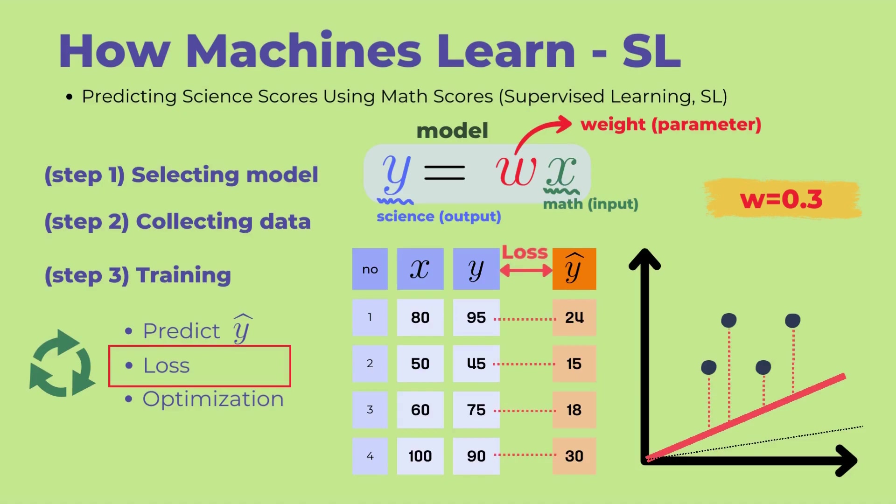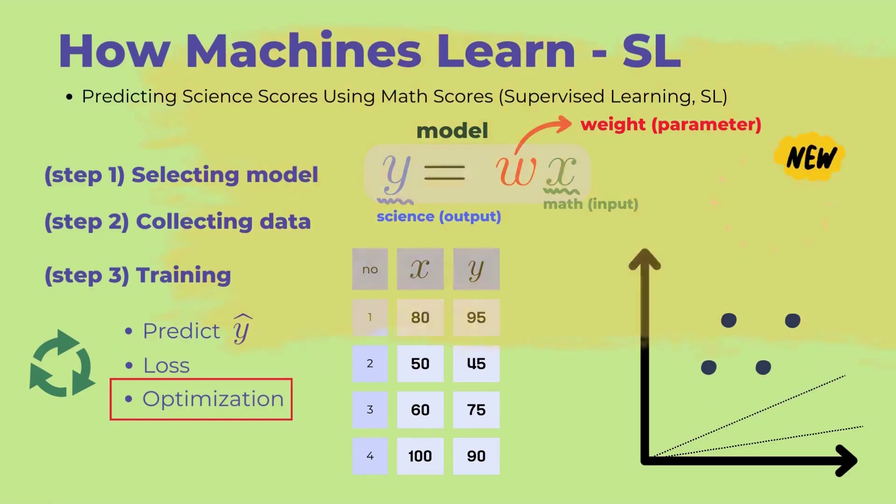Next, we calculate the loss. We can see that the difference between the actual Y values and the predicted Y values has decreased compared to before. However, there is a need to further reduce the current loss. To decrease the current loss, we perform optimization by adjusting the parameters. The value of W has been changed from 0.3 to 0.5.